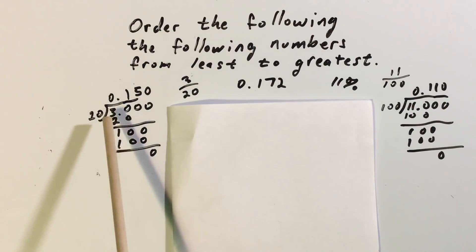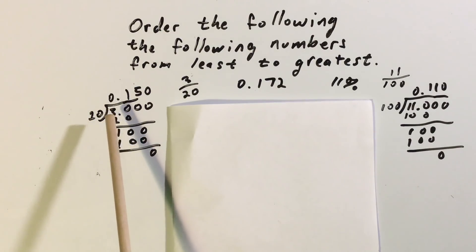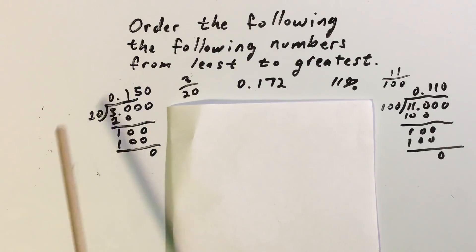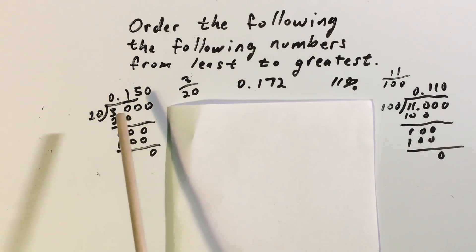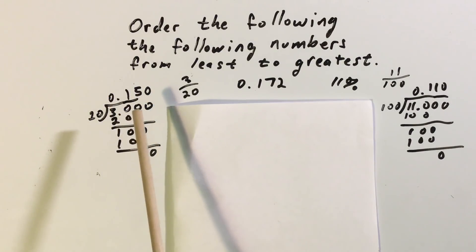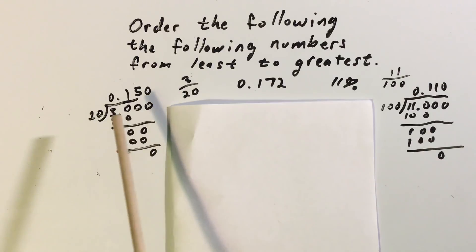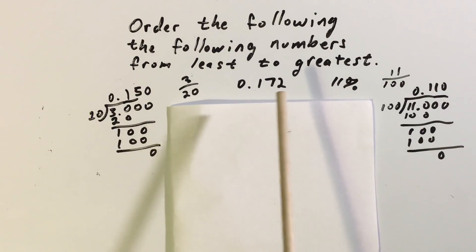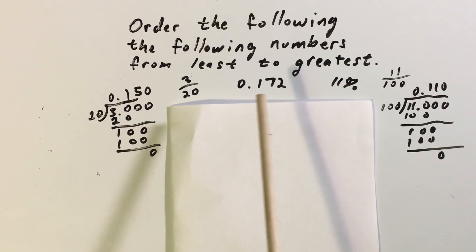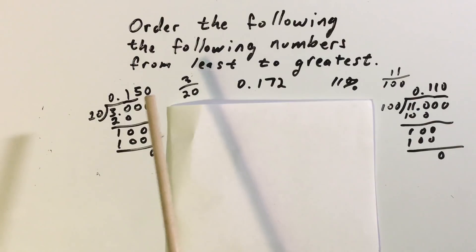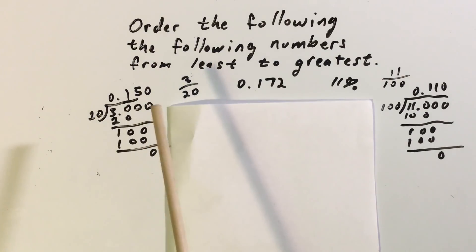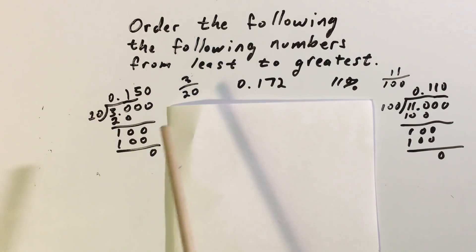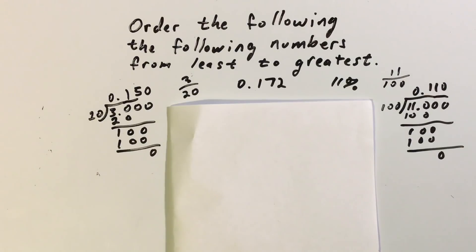Twenty does not go into three, so I put zero. I add a decimal point, and this time I added three zeros because I am going three decimal places. Here is the rest of my work for that, and as you can see I wind up with a hundred and fifty thousandths, or 0.150.